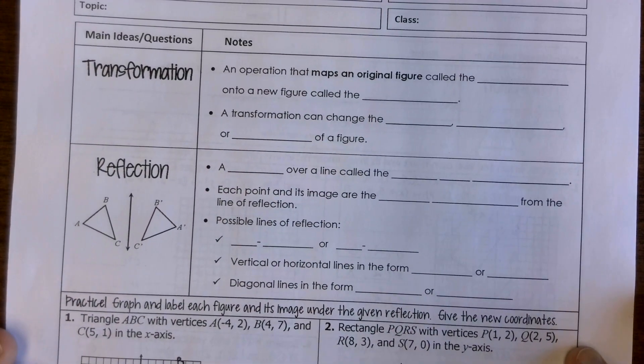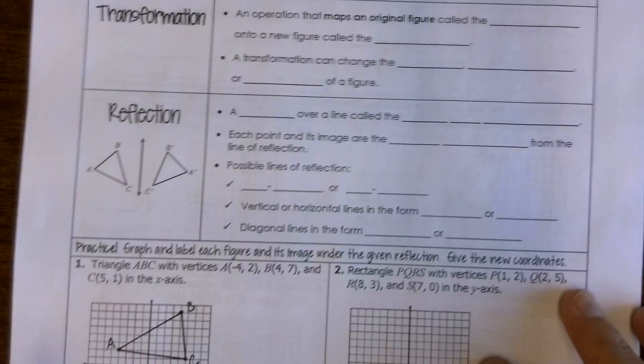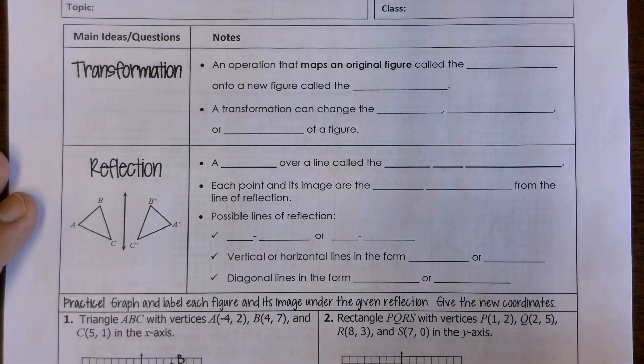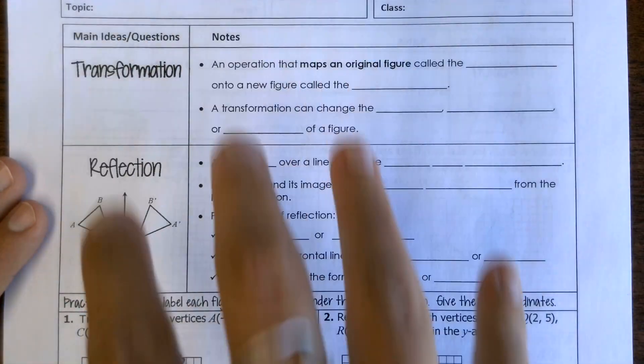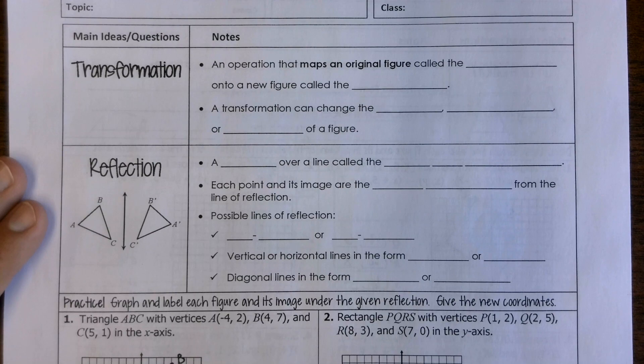We've got our transformation notes. So we saw from the video about animation that there are three different types. We've got our reflection, which is basically like a flip. We've got translations, which is just moving a figure, sliding it. We have rotations, which is going to turn a figure, and then dilations, which makes it bigger or smaller. So we're just going to focus on reflections and translations for today. We'll do the other two tomorrow.